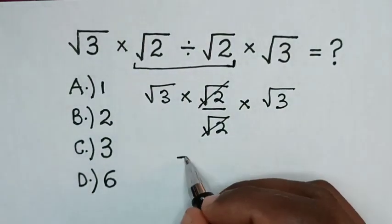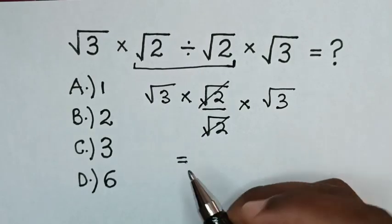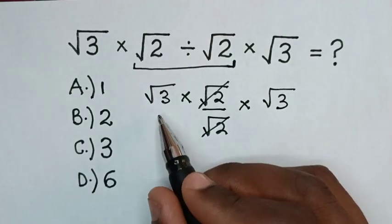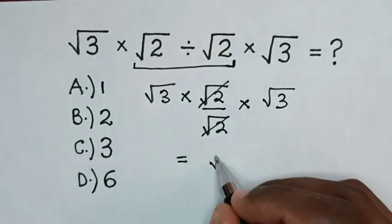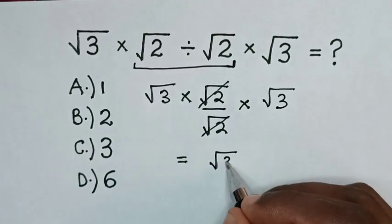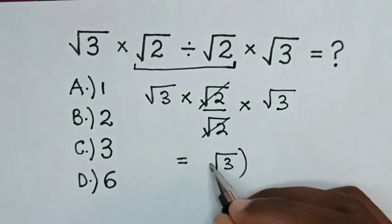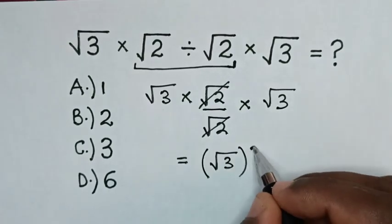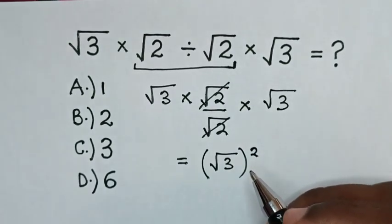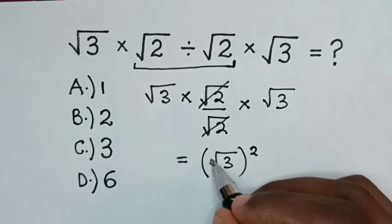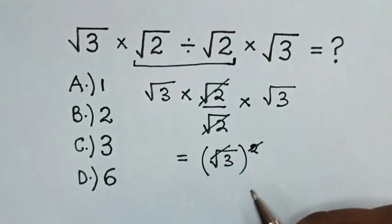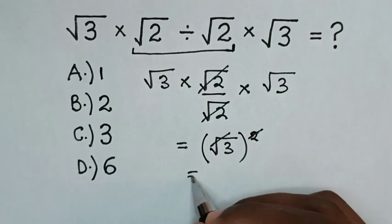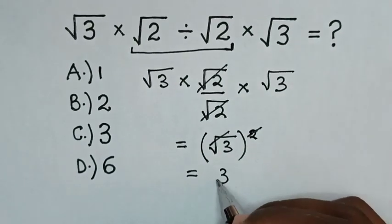So it will be equal to square root of 3 times square root of 3, which is the same as square root of 3 bracket squared. So this square root will cancel with this square, then it will be equal to 3.